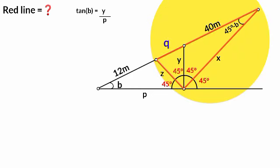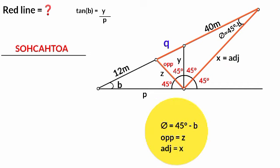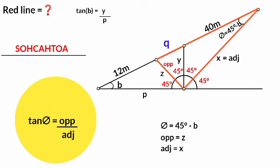Meaning this triangle is also a right angle triangle. So using the trigonometric ratio, if we take this angle as theta, this is the opposite and there is an adjacent. So theta equals 45 degrees minus B, opposite equals Z, and adjacent equals X. We know tan(theta) equals opposite over adjacent. So tan(45° − B) equals Z over X.